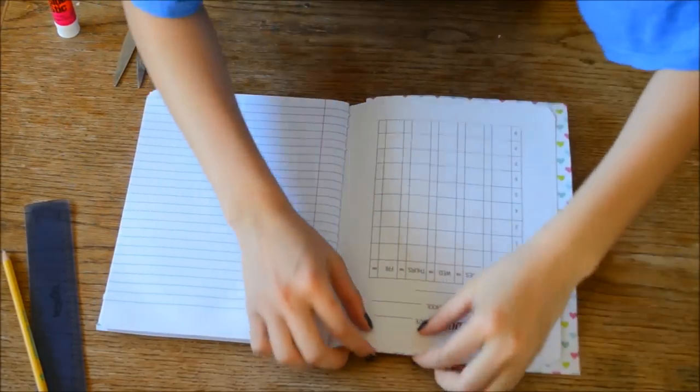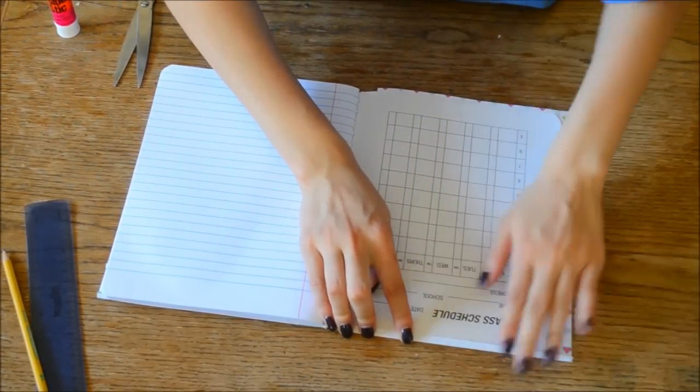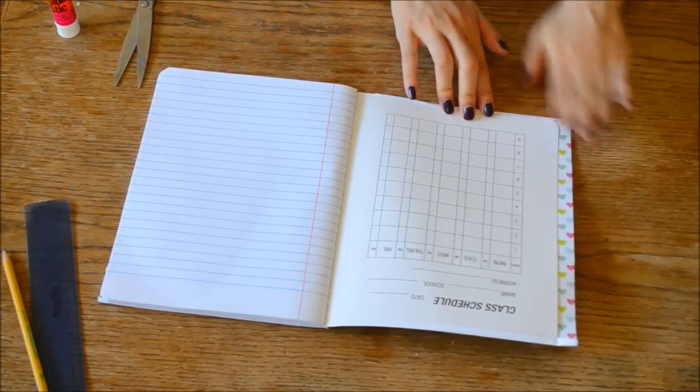So to make a seamless cover you're just going to take some of the excess paper and you're just going to fold it in. And trust me, you should fold it in first. It's going to make your life so much easier.